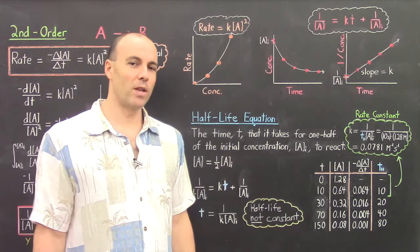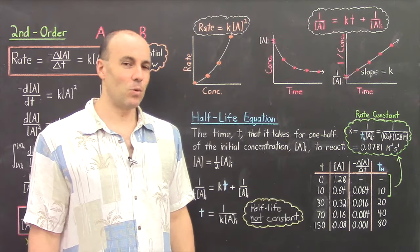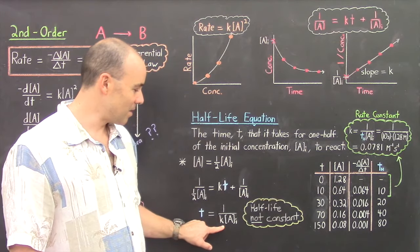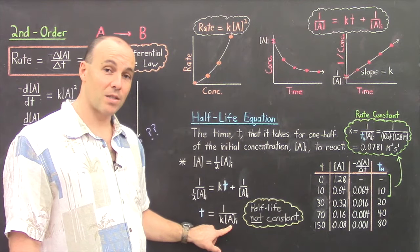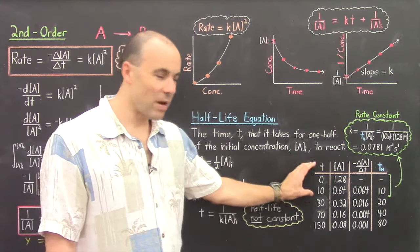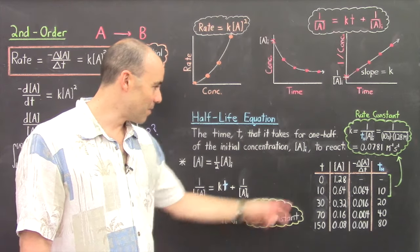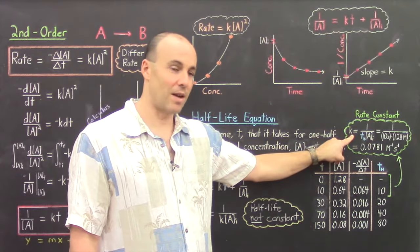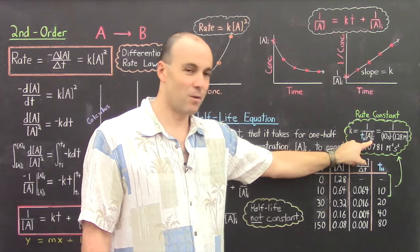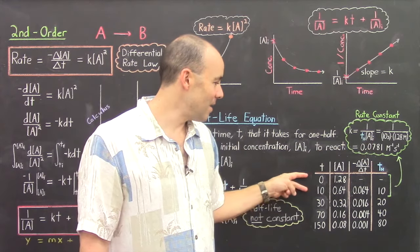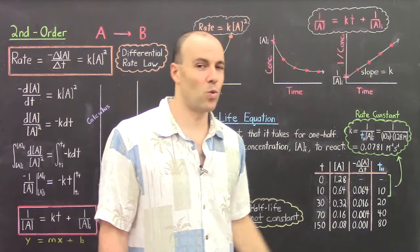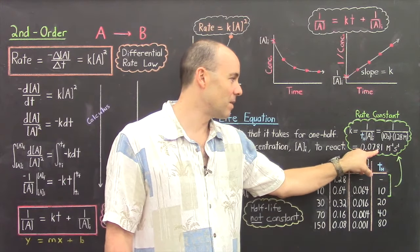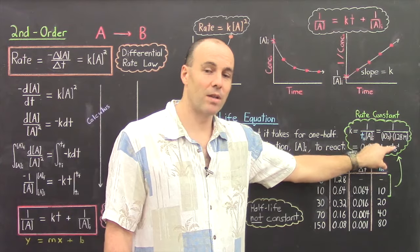As one final point, if you wanted to calculate the rate constant given this experimental data, we can see that the rate constant is related to the half-life and the previous concentration. We can use any two pairs of data points: using the first two sets and solving t_half = 1/(k × [A]₀), the rate constant k equals 1 divided by the half-life times the initial concentration. Here the half-life is 10 seconds and the initial concentration is 1.28 M, giving a rate constant of 0.0781 M⁻¹s⁻¹.